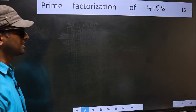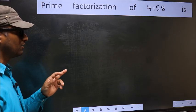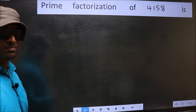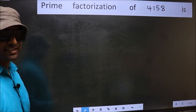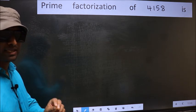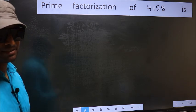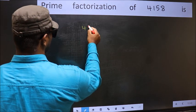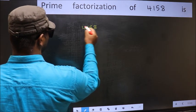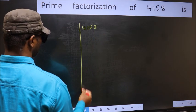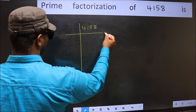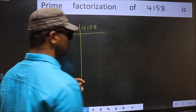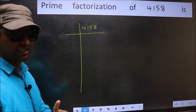Prime factorization of 4158. To do prime factorization, first we should frame it in this way: 4158. This is your step 1.